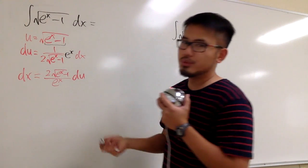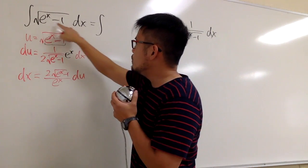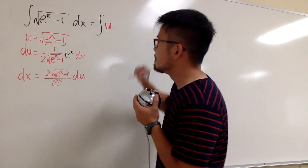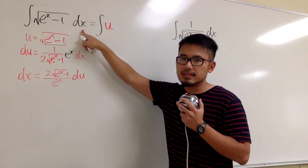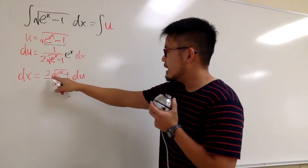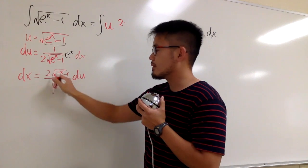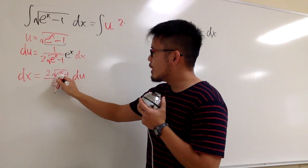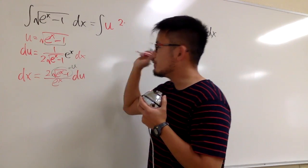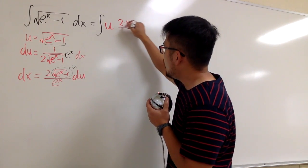Now let's take this integral into the u-world. The square root of e to the x minus 1 is just u, so we put down u. For the dx, we substitute in our expression. So we have 2, times the square root of e to the x minus 1 — which is again u — over e to the x, times du.